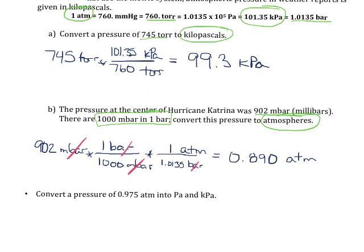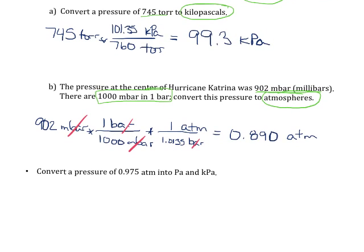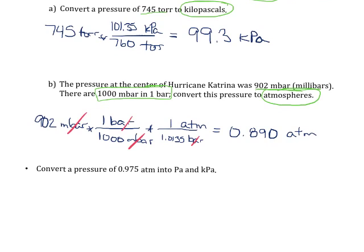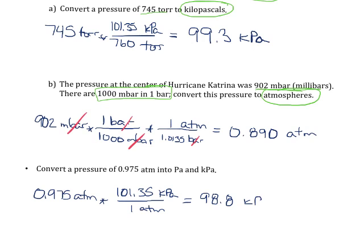And the very last conversion we have here, this time they're giving it to us in atmospheres and they want us to convert that into both pascals and kilopascals. So a very similar situation here. Start with what we know, 0.975 atmospheres, and we'll go ahead and convert to kilopascals first. So we know that there are 101.35 kilopascals for every 1 atmosphere. So that's going to give us an answer of 98.8 kilopascals.